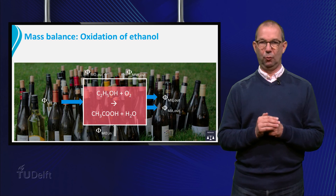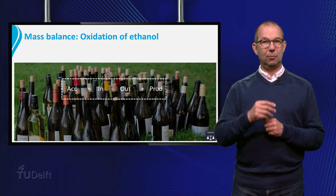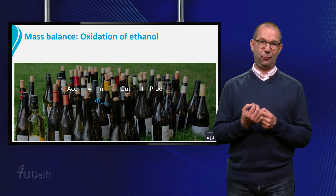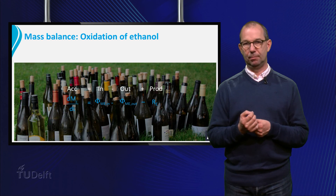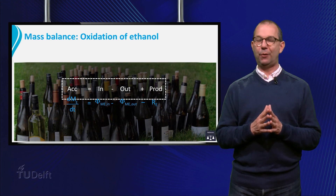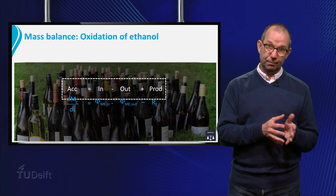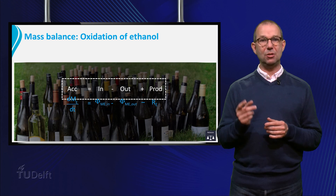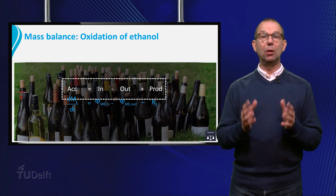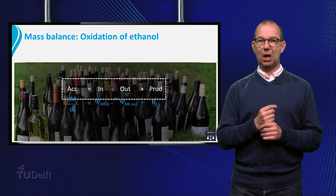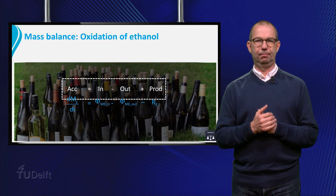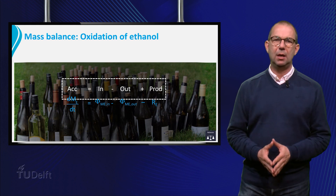Now we can set up a mass balance for one species in the process, for example ethanol. Again we write: accumulation equals in minus out plus production. The production is negative and we denote it by minus R-sub-E — the amount of ethanol that reacts with oxygen to form acid per unit of time. The inflow and outflow are denoted by phi-sub-mE,in and phi-sub-mE,out. On the left hand side, the accumulation term is written in a specific mathematical form: d/dt of M-sub-E. This denotes, in a formal mathematical way, that the mass of ethanol inside the reactor is changing over time. Check out one of the glass plate examples where we show how to do this mathematically. Applying this all to ethanol gives us the following mass balance.